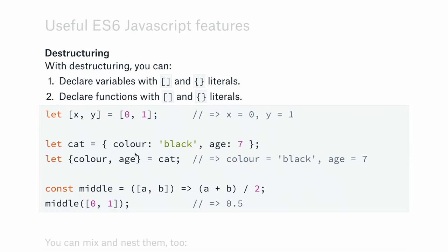You can also destructure objects. Given a cat with color 'black' and age 7, you can write 'let {color, age} = cat', and the variable names must match the keys in the object. You'll then have a variable 'color' with value 'black' and 'age' with value 7. You can also use destructuring in function parameters — for example, a function 'middle([a, b])' immediately has access to a and b. This is really useful for passing geospatial locations with longitude and latitude.